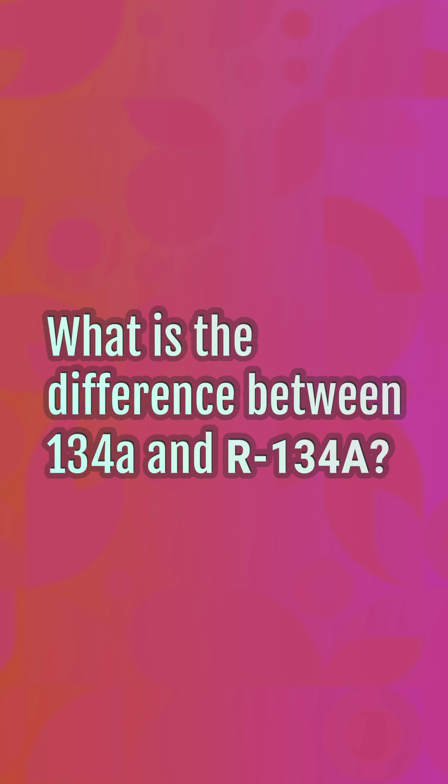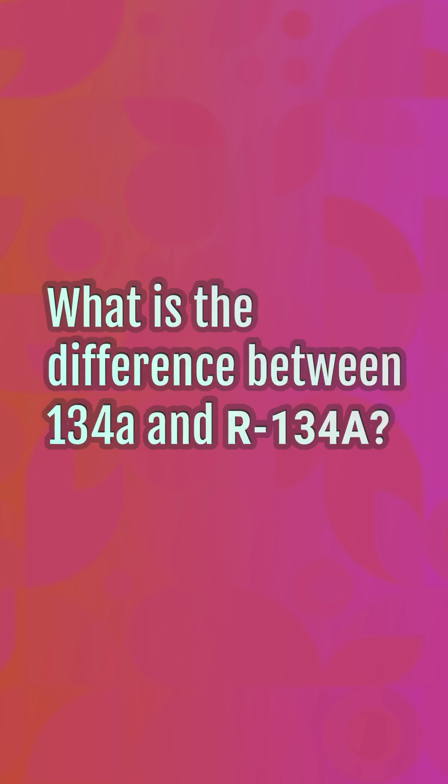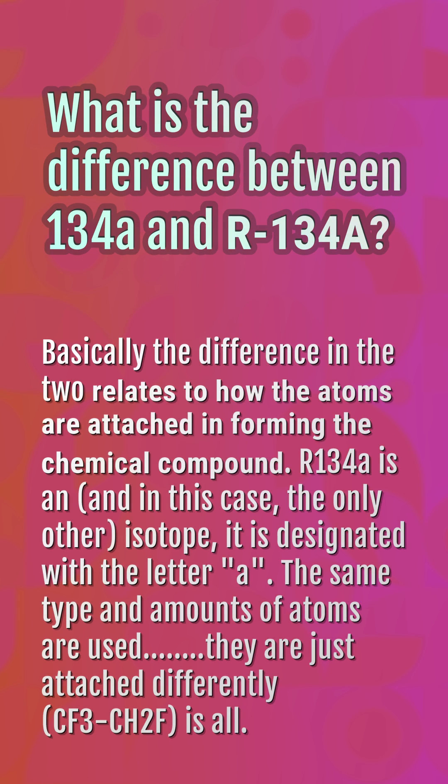What is the difference between 134A and R134A? Basically, the difference relates to how the atoms are attached in forming the chemical compound. R134A is an isomer — the only other isotope — designated with the letter A. The same type and amounts of atoms are used, they are just attached differently: CF3CH2F.